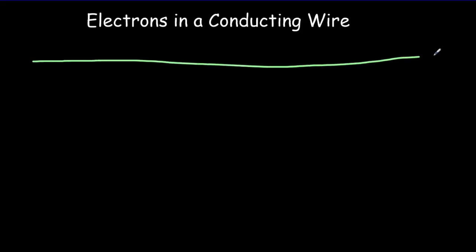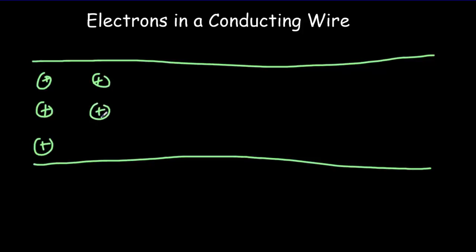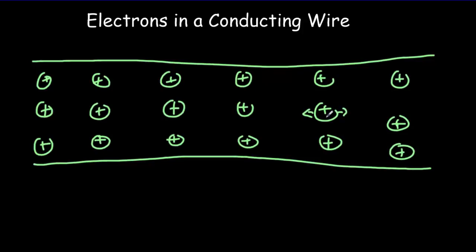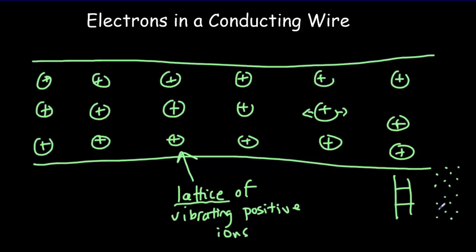Let's suppose we've got a conducting piece of wire — it could be a copper wire. Inside that wire we would have what's called a lattice of positive ions, which are vibrating about fixed points. The word 'lattice' refers to a kind of three-dimensional structure — like a ladder, where the lattice points are at all the vertices. Making it three-dimensional, it becomes more like scaffolding. This network of points is called a lattice, and all of these positive ions are vibrating about a point in that lattice.